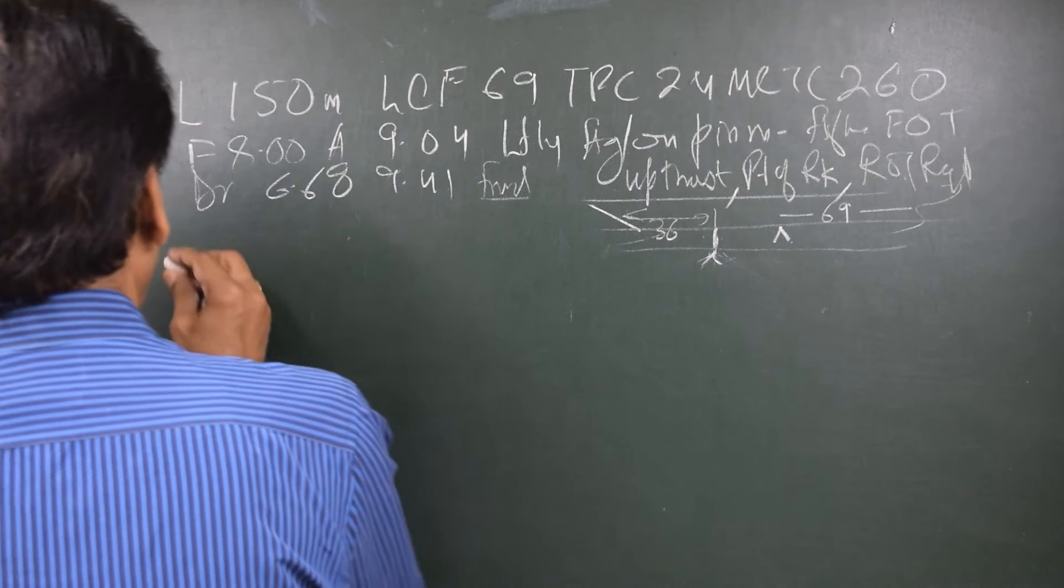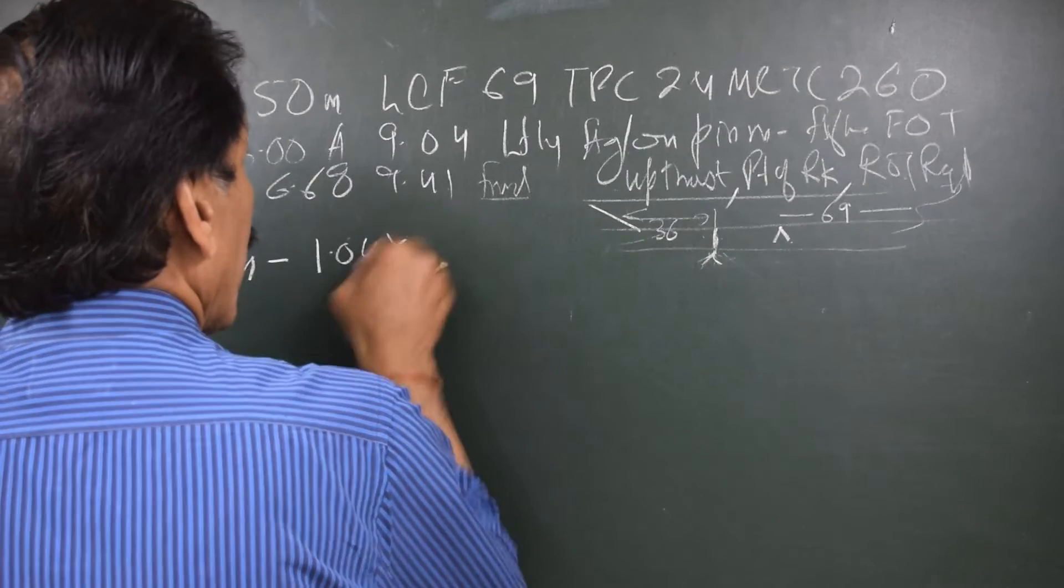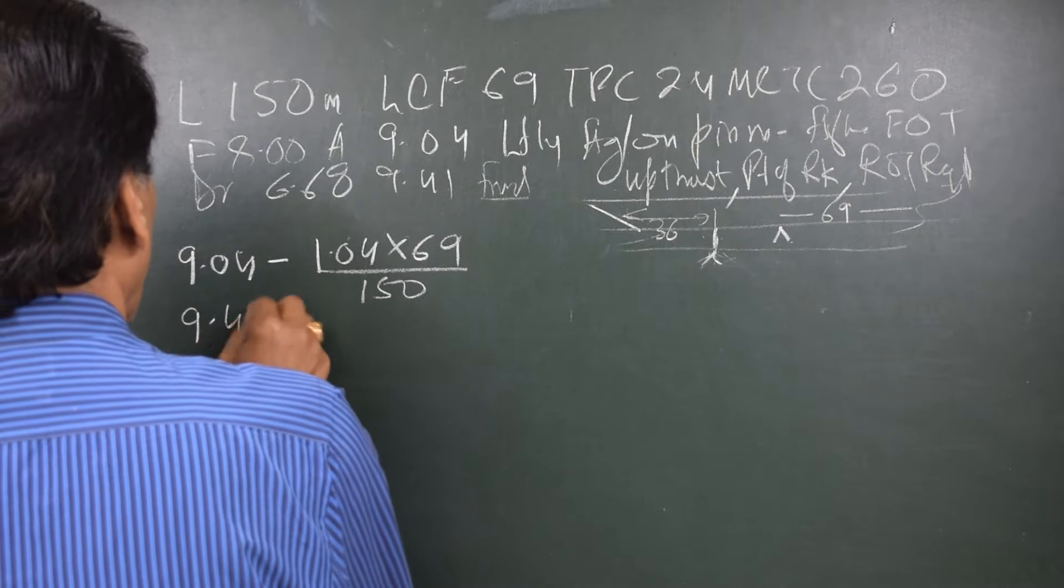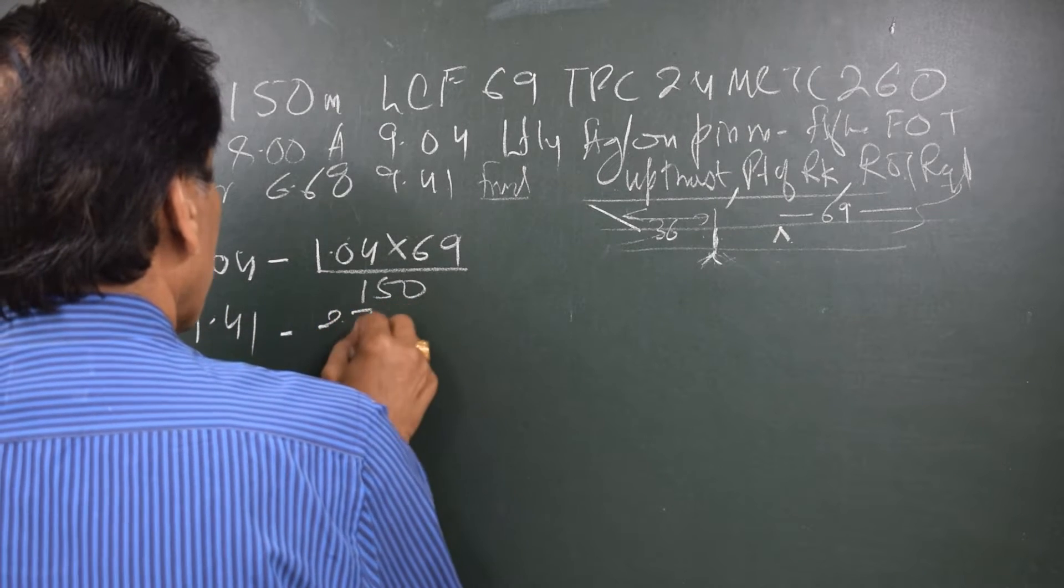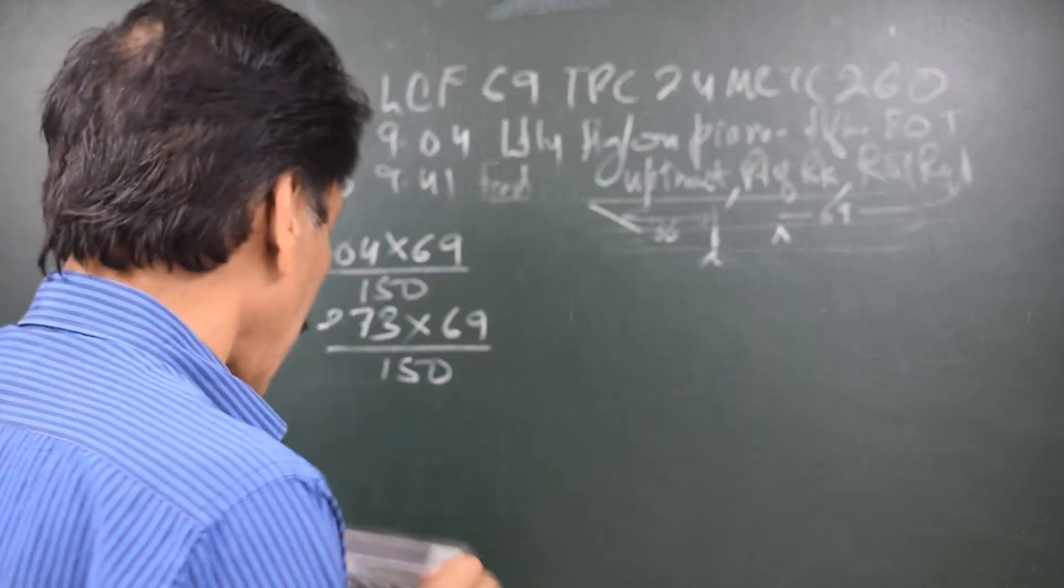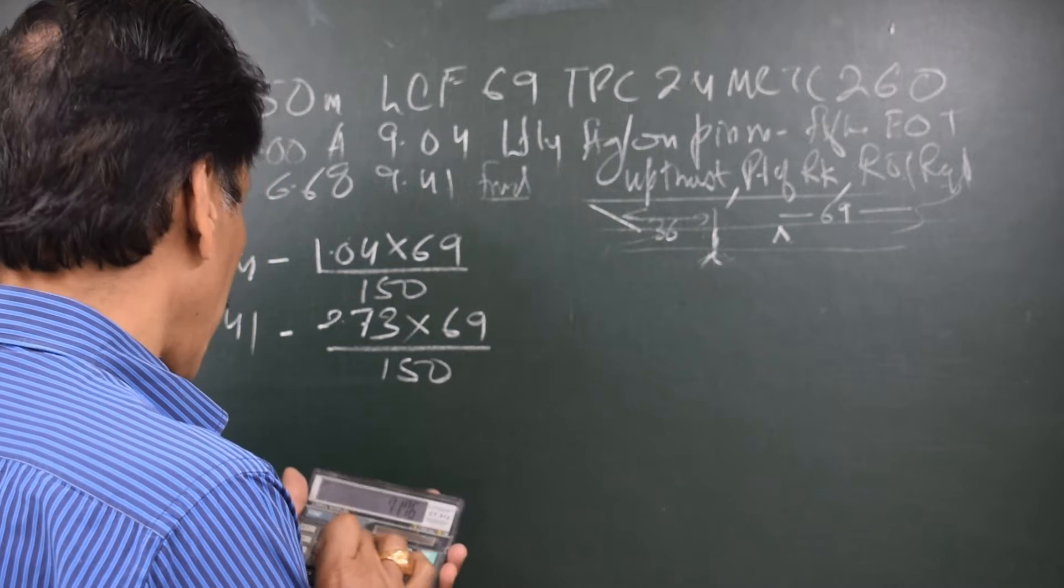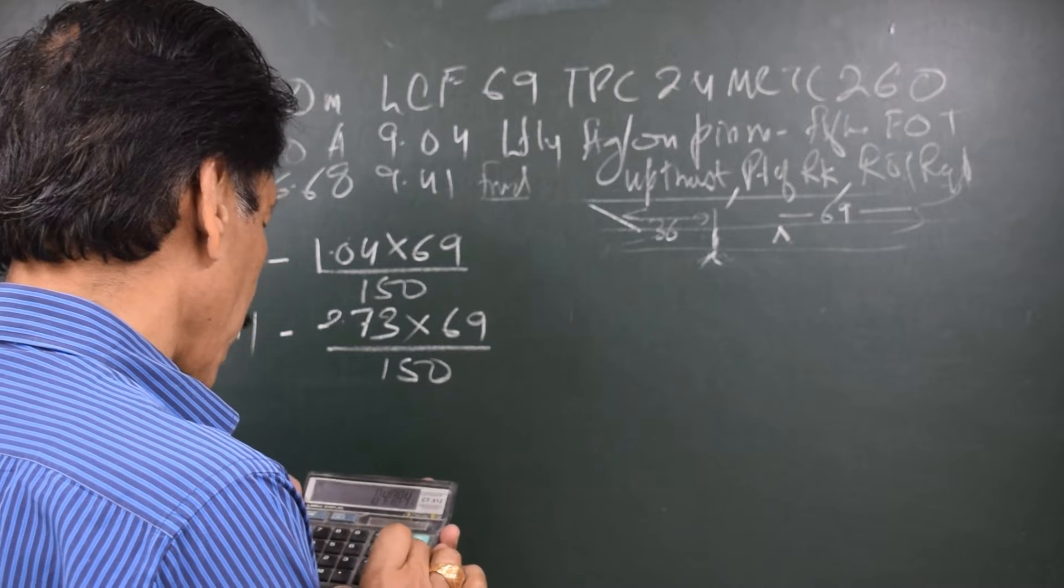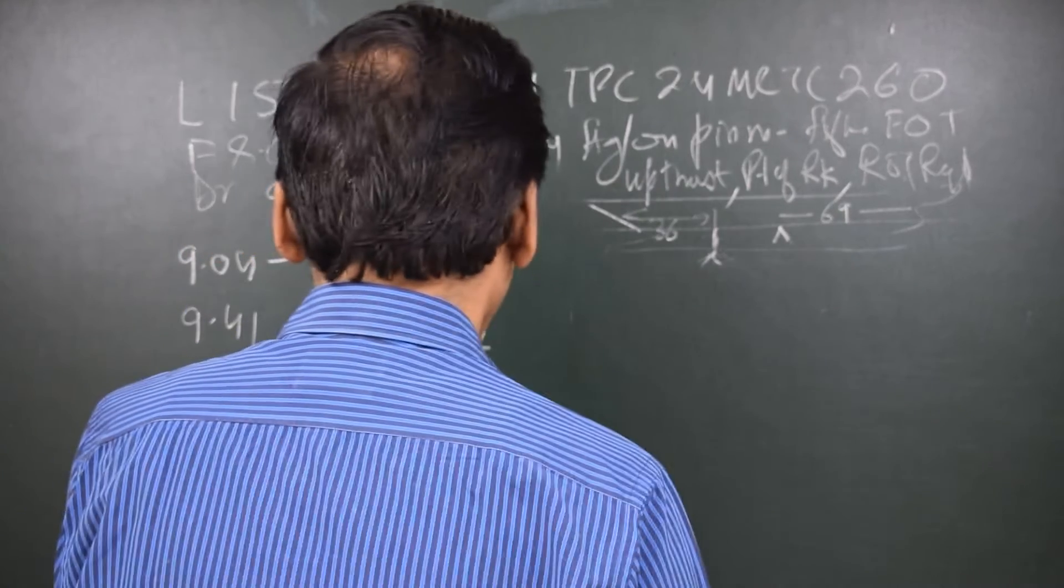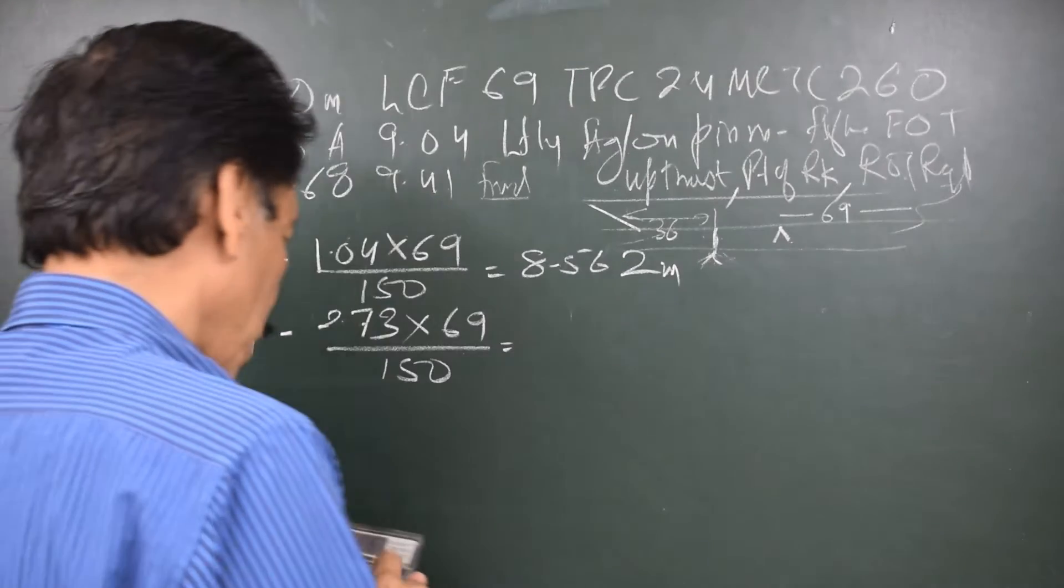Let us find out the initial hydrostatic draft. That would be aft draft 9.04 minus the trim 1.04 into LCF divided by 150. So 1.04 into 69 divided by 150 equals, minus 9.04 gives me 8.562 meters.